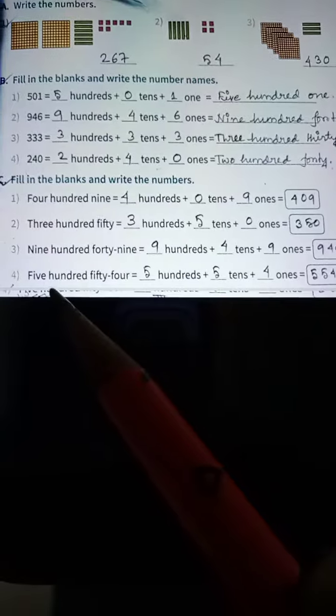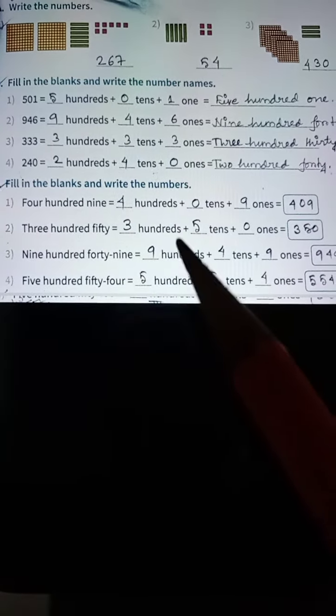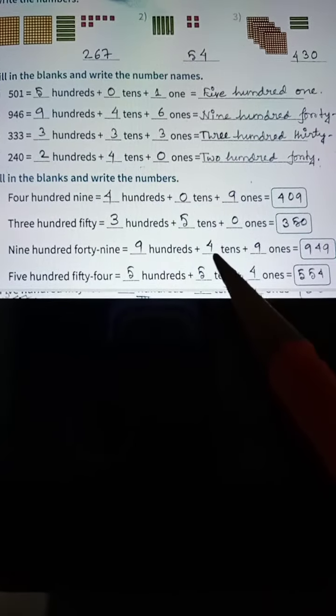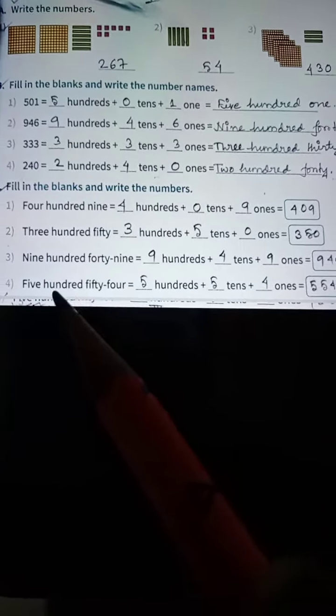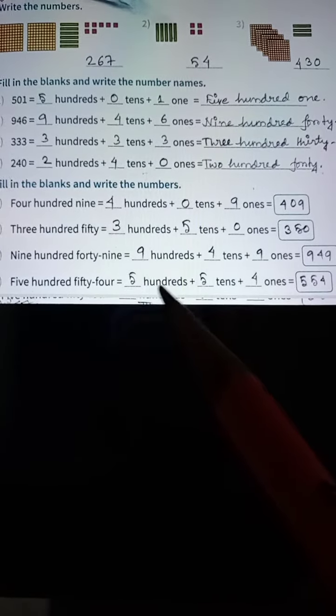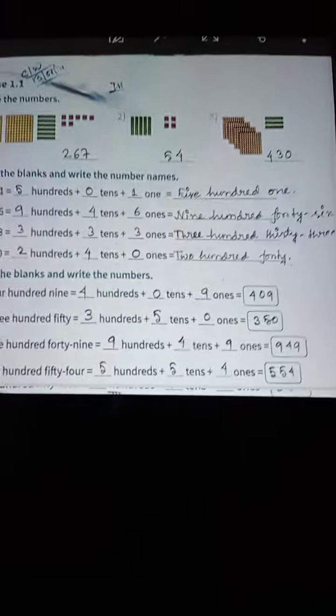Next one is nine hundred forty-nine, 9 hundreds plus 4 tens plus 9 ones, so 949. Five hundred fifty-four, 5 hundreds plus 5 tens plus 4 ones, 554. So this is your class work.